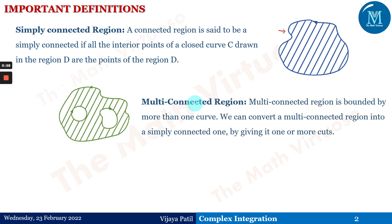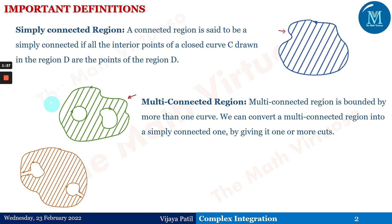A multi-connected region is bounded by more than one curve. We can convert a multi-connected region into a simply connected one by giving it one or more cuts. For example, in a multiply connected region, the white unshaded part is the hole in that region. By making a cut from one boundary point to another, we bring the hole outside the curve, effectively converting the multiply connected curve into a simply connected one.